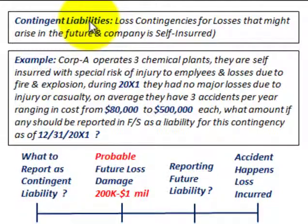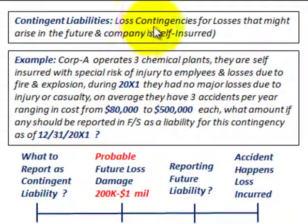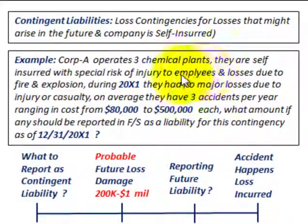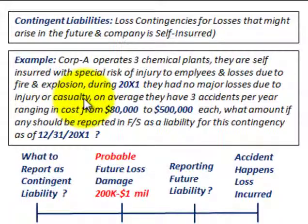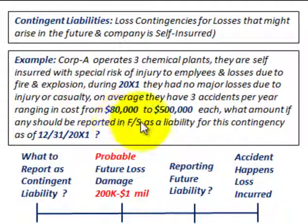We're going to be going over contingent liabilities or loss contingencies for losses that might arise in the future, where the company is self-insured or doesn't have any insurance to cover these losses. In this example, Corporation A operates three chemical plants and is self-insured against the special risk of injury to employees and losses due to fire and explosion. During 20X1 they had no major losses, but on average have three accidents per year ranging from $80,000 to $500,000 each. The question is: what amount, if any, should be reported as a liability or contingent liability as of 12-31-20X1?